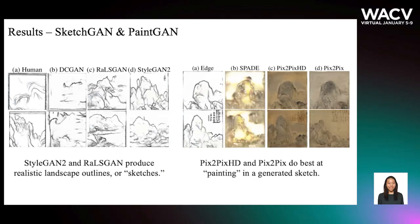Here are the individual results of SketchGAN and PaintGAN. We find that StyleGAN2 and a relativistic least squares GAN produce realistic landscape sketches. For PaintGAN, we find that Pix2Pix HD and Pix2Pix do best at painting in a generated sketch. Spade, meanwhile, overfits and produces over-saturated paintings.